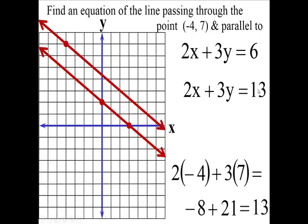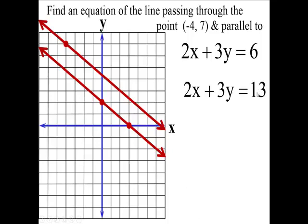You're getting 13. So when this number is 13, then you have the parallel line, the line with the same slope. The 13 guarantees that it goes through the point (-4, 7). So this is an equation of the line that passes through the point (-4, 7) and is parallel to the original line.